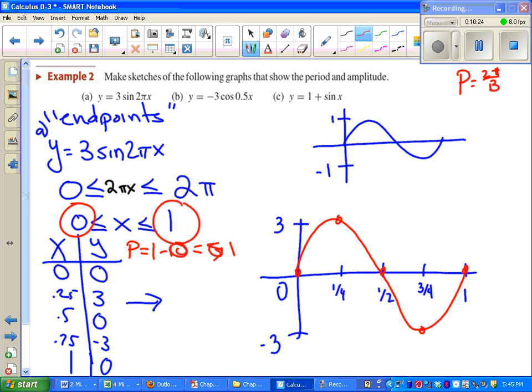A lot of books also give you a formula for period called two pi over b. We'll talk more about that a little bit later. But b happens to be the number next to x on the inside of sine or cosine. And that two pi over b formula works for sine and cosine, not tangent.